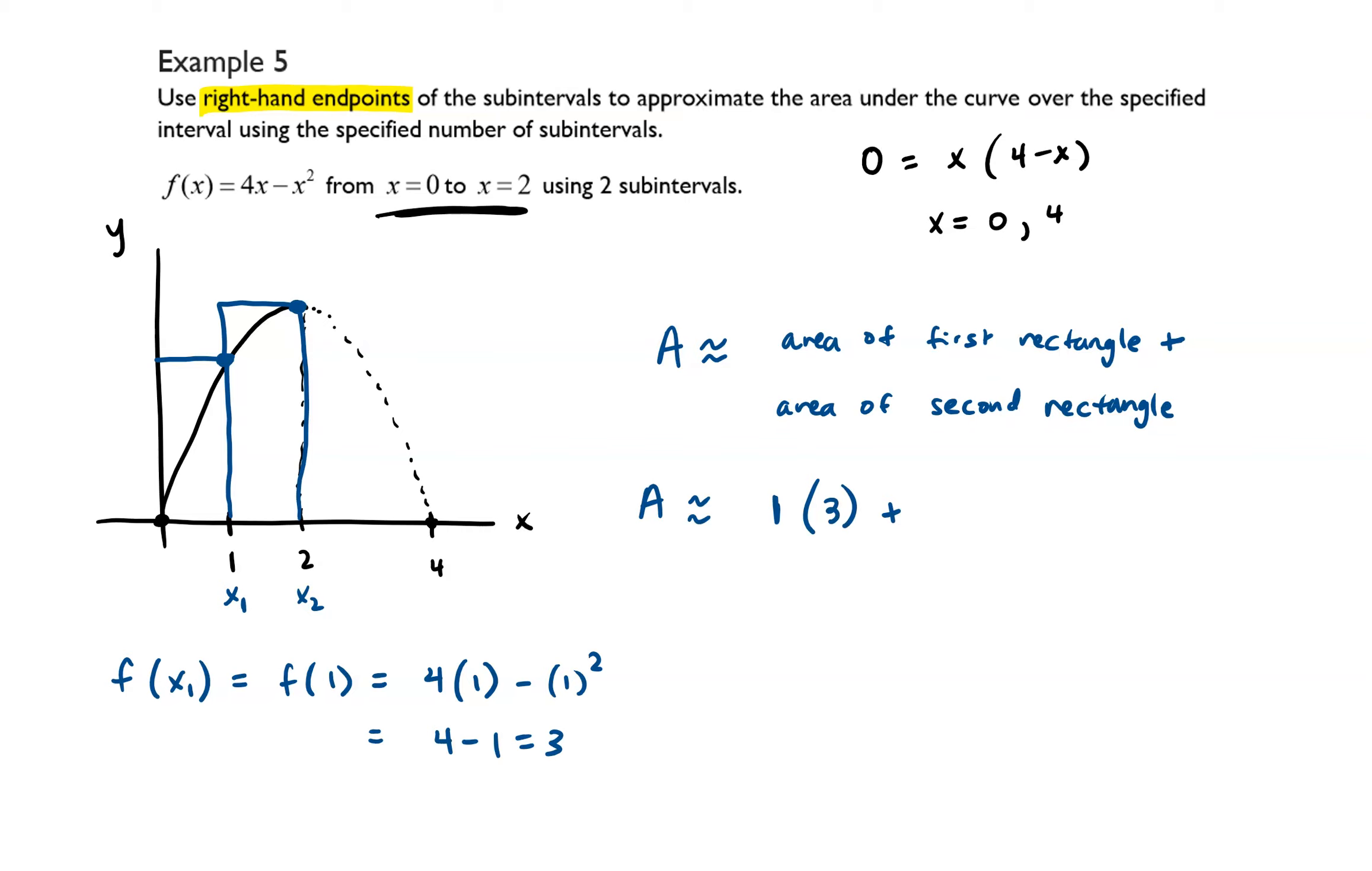And then plus the area of the second rectangle. Well, the base is going to be 1 and we need to figure out the height. So that's going to be f of x2, which is equal to f of 2, which is equal to 4 times 2 minus 2 squared. That's 8 minus 4, which is equal to 4. So that ends up equaling 3 plus 4, which is equal to 7. So using right-hand rectangles, we get that our approximate area for the curve is 7.